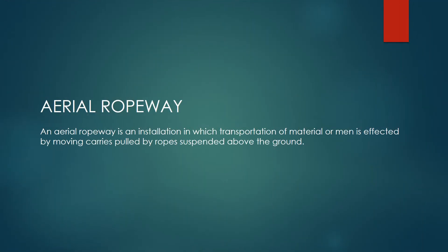Aerial Ropeway. An aerial ropeway is an installation in which transportation of material or men is effected by moving carriers pulled by ropes suspended above the ground.